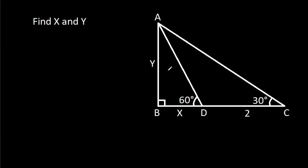In this video, we have been given a right triangle ABC in which angle ADB is 60 degrees, angle ACB is 30 degrees, and CD is 2. BD is x and AB is y. We have to find x and y.